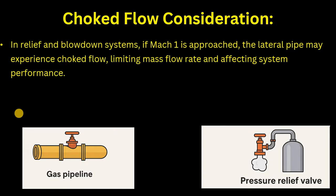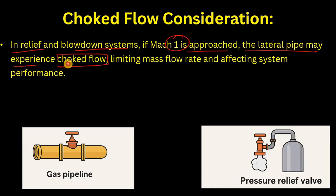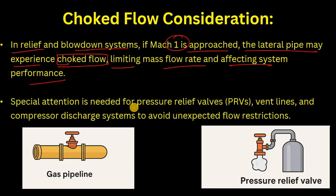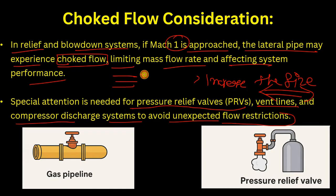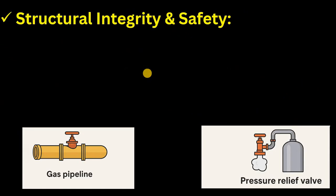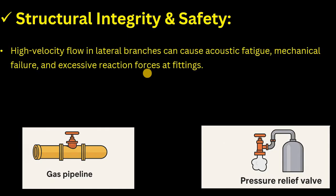In relief and blowdown systems, if the Mach number approaches one, the lateral pipe may experience choked flow, limiting mass flow rate and affecting system performance. Special attention is needed for pressure relief valves, vent lines, and compressor discharge systems to avoid unexpected flow restrictions. In such cases, we typically increase the pipe size or create line segments with successive reducers — for example, stepping from 3-inch to 2-inch to 1-inch.